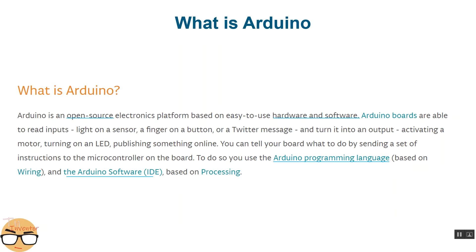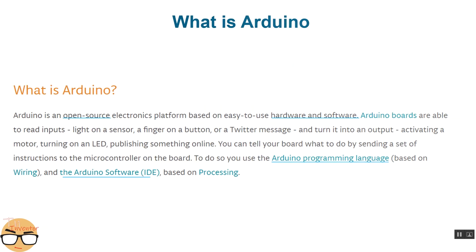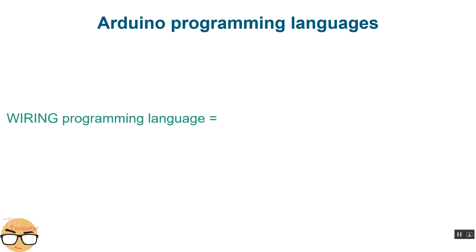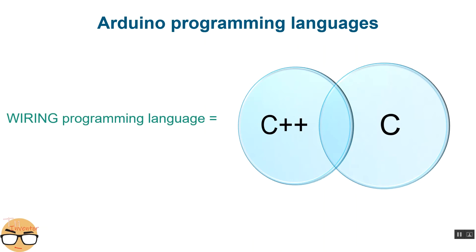I will talk about open source later. For now, focus on hardware and software. Arduino is a company, and as a company they have a product. By hardware we mean the main boards, which we will talk about in just a second. By software we mean the Arduino IDE, aka integrated development environment. Arduino uses what's called the Wiring programming language — many people mistake it for C or C++, while in fact it's actually a combination of the two.